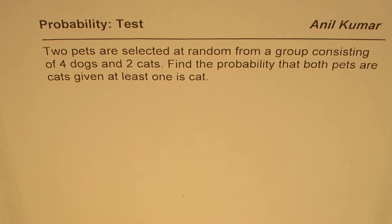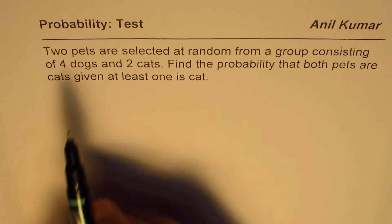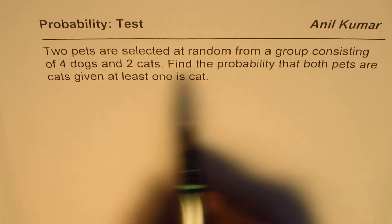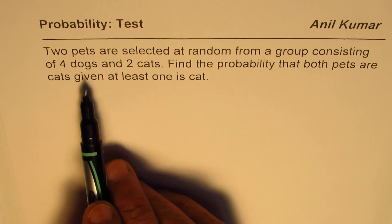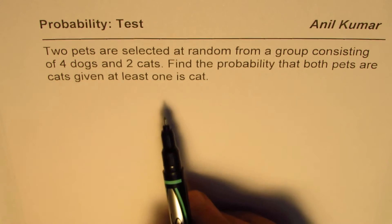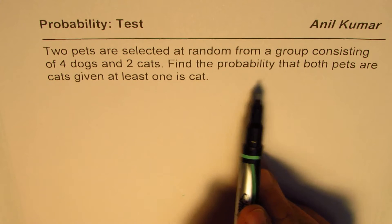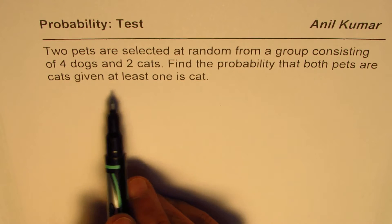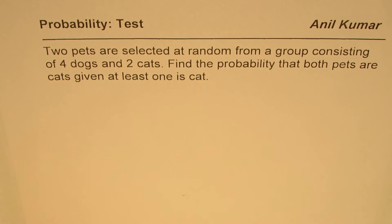I'm Anil Kumar and here is an excellent example from a previous test paper on probability. The question is: two pets are selected at random from a group consisting of four dogs and two cats. Find the probability that both pets are cats, given at least one is a cat. You can pause the video, answer the question, and then look into my suggestions.